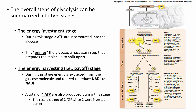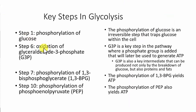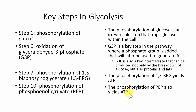To overview: we invested two ATP, charged our glucose, split it, added more phosphate, stripped that back off, and ended up with four ATP. After investing two, we have a net of two ATP. Some key steps: step one — the phosphorylation of glucose — is an irreversible step that traps glucose within the cell. Step six — the oxidation of glyceraldehyde-3-phosphate — is a key intermediate step that also involves the addition of phosphate. Steps seven and ten give us the net yield of ATP, for a total of four gross and two net ATP per glucose.